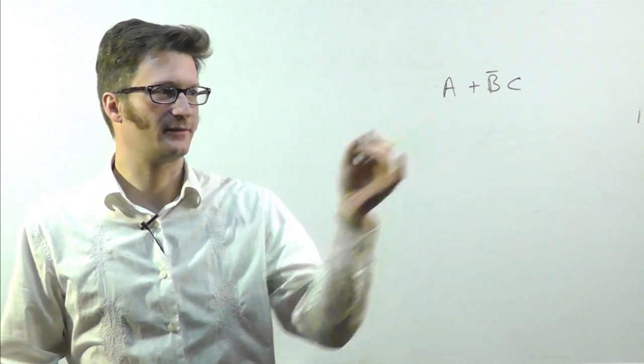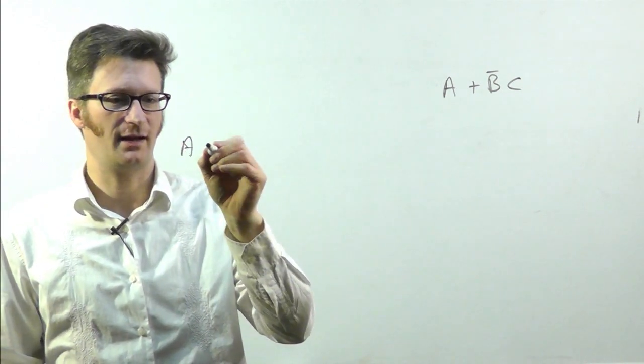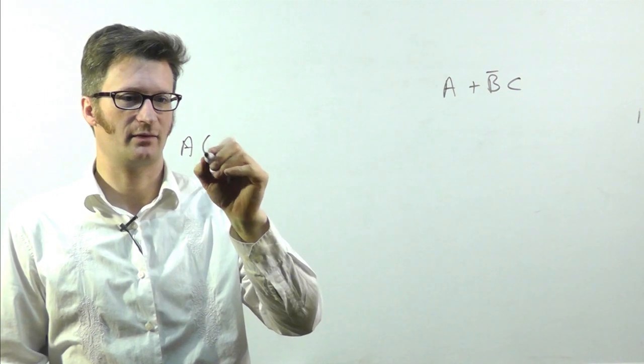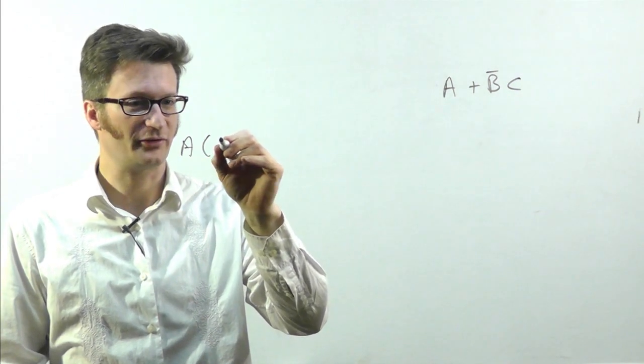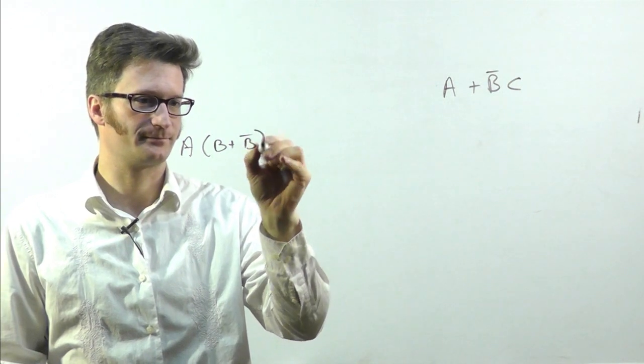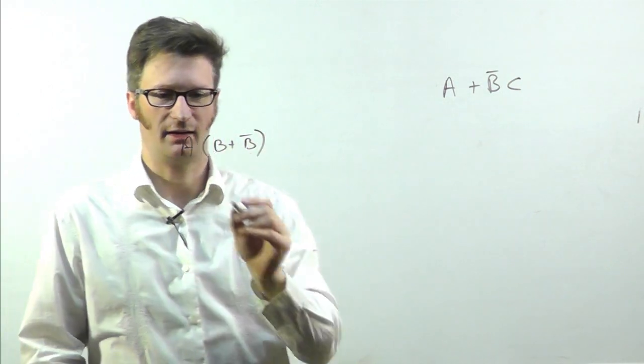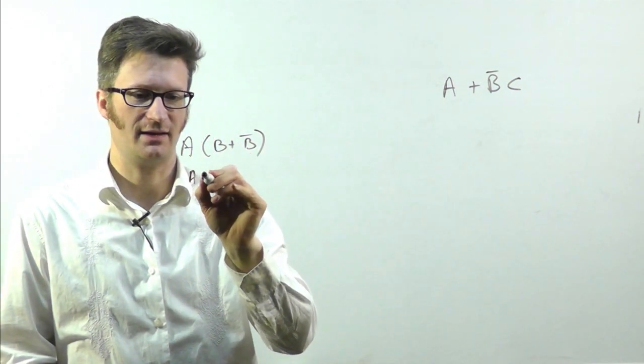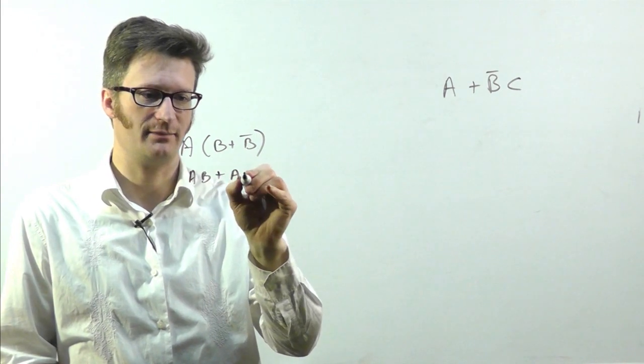So I'm going to take this first term, A, and I'm going to multiply by B or B bar. And I get A, B, or A and B bar.